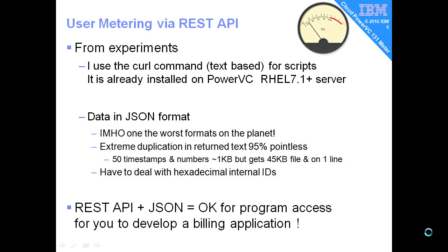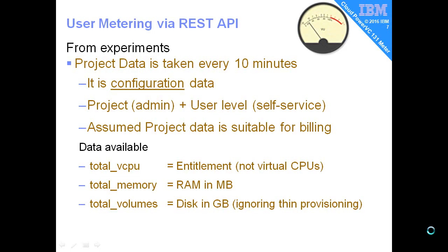The REST API in JSON format is okay if you're running some sort of programming language that understands these things, and you can then develop your own billing application. But if you just want something simple, it's quite a difficult task. For project data in PowerVC, you'd have lots of projects for different tenants or user departments. That data is taken every 10 minutes or so — think of it as configuration data, not live usage. It's how many CPUs are allocated to the virtual machines of a project. You can get the data at project level or user level; I've assumed project data is what we want.